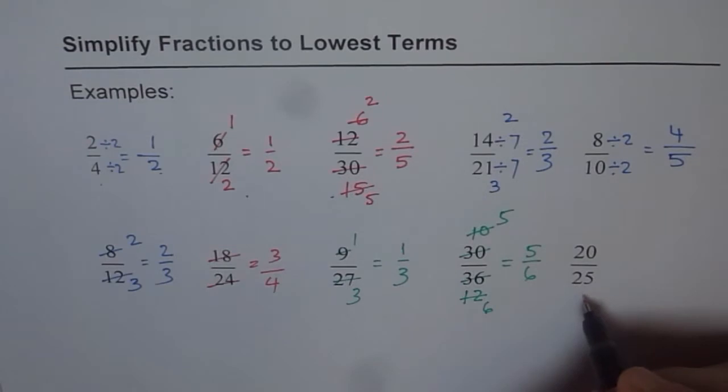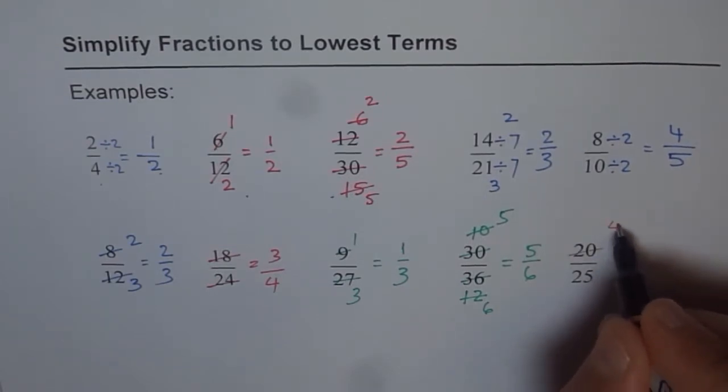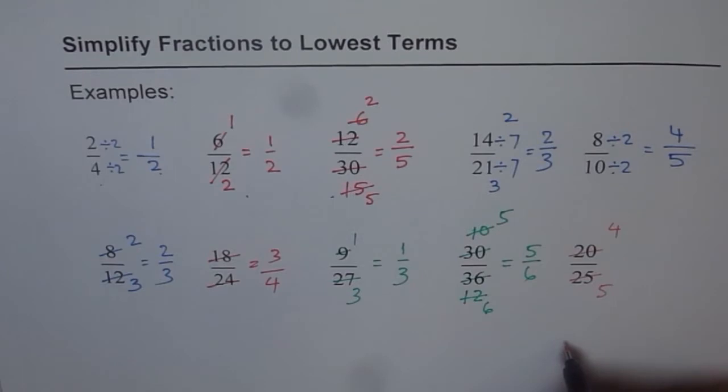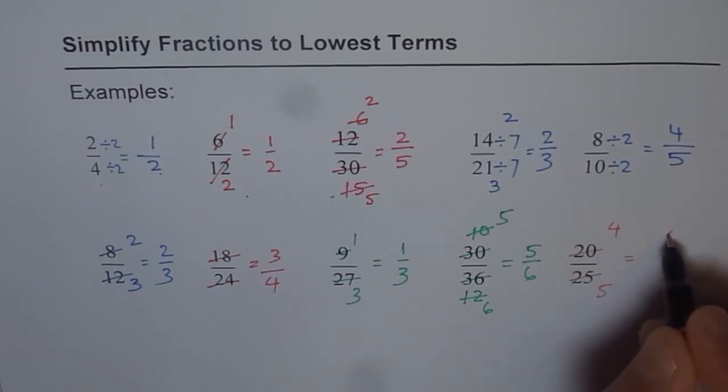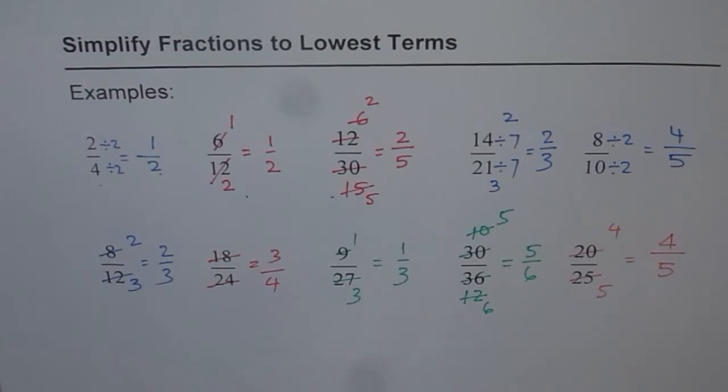How about 20 divided by 25? I can divide both by 5. 5 times 4 is 20. 5 times 5 is 25. And therefore, this is equal to 4 over 5. So that is how you can simplify fractions to lowest terms.